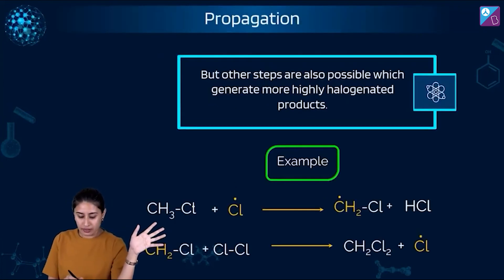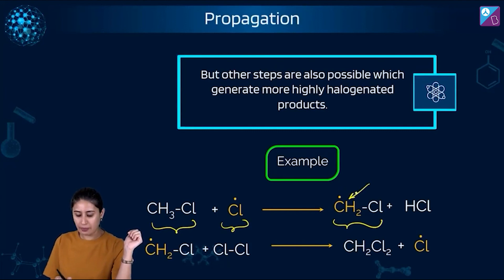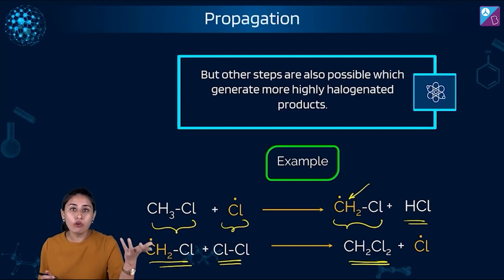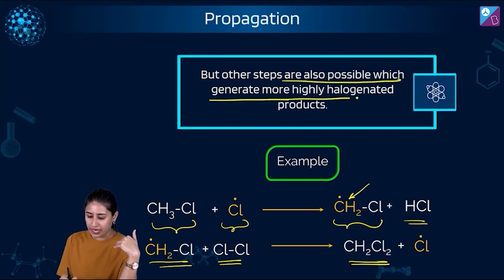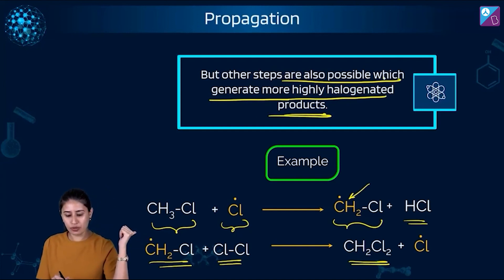There can be other species also that can be formed. For example, look at this: CH3Cl can react with chlorine free radical further to give you CH2Cl with carbon having a free radical on it and HCl. And this can further react to give you CH2Cl2. You also know that we can have CHCl3 also, you know that we can have CCl4 also. But because we are talking about the primary product CH3Cl, hence my focus was on showing you CH3Cl formation from step 1 and 2. But you know that there are other possible products also. Steps are also possible which may generate more highly halogenated products.